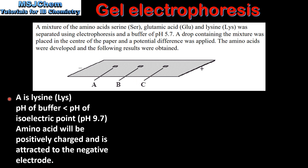Amino acid A is lysine. The pH of the buffer, which is 5.7, is less than the pH of the isoelectric point of lysine which is pH 9.7. Therefore the amino acid will be positively charged and is attracted to the negative electrode.